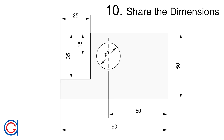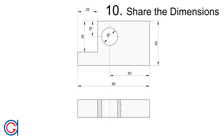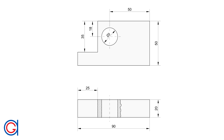Rule 10: When we have 2 or more views we need to adequately share the dimensions between the views. As can be seen here, we put 3 dimensions on the plan view and the rest on the elevation view. I recommend that you dimension each shape in the view where you can more easily distinguish the measurements.